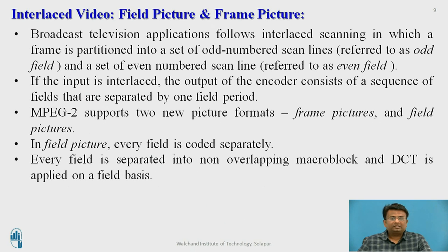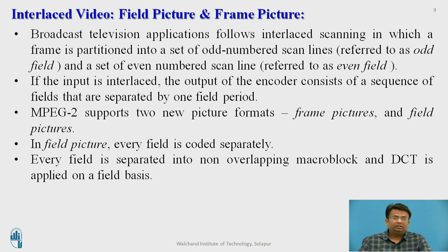MPEG-2 includes interlaced scanning in which odd and even lines are scanned separately. If the input is interlaced, the encoder output consists of a sequence of fields separated by one field period. MPEG-2 supports two new picture formats: the frame picture and the field picture format. In the field picture, every field is coded separately and divided into non-overlapping macroblocks, with a DCT applied on a field basis.